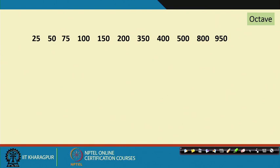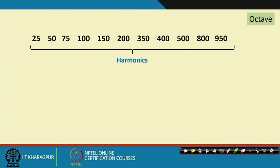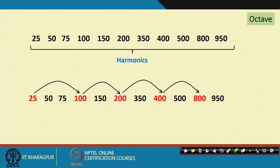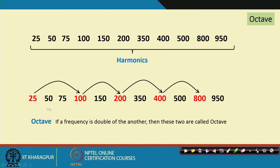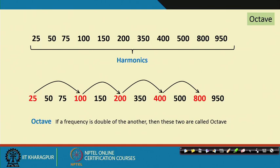Let us take a particular band of the spectrum of a complex tone where 25 Hz is the fundamental tone and all frequencies in the series are integer multiples of 25 — so it is a harmonic series. Within these harmonics, frequencies such as 25, 100, 200, 400, and 800 are double of each other. This doubling relationship is called the octave.